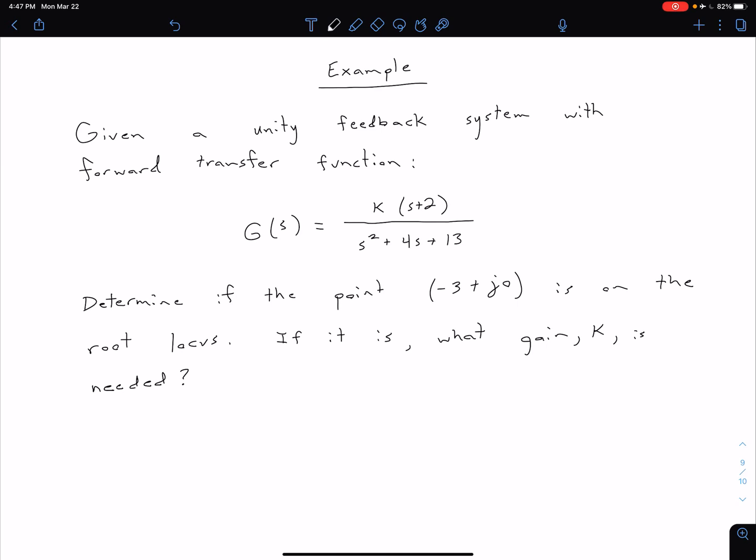Determine if the point (-3 + j0) is on the root locus. If it is, determine what value of gain K is needed to get us to that point on the root locus.